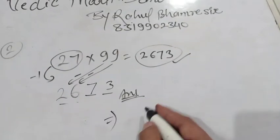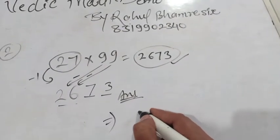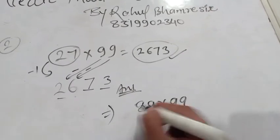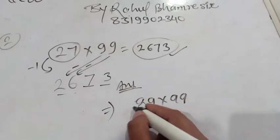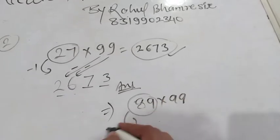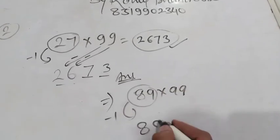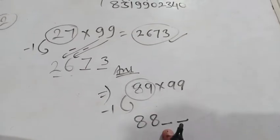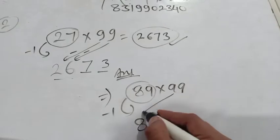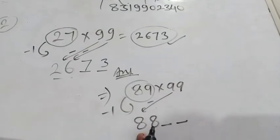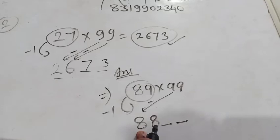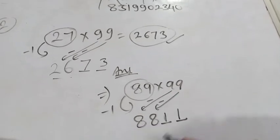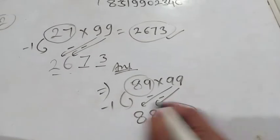The second term. If we take 89 multiply by 99. What will we do? We do less 1, 88. And also we have to space for 2 digit. 9 minus 8, the first digit. 9 minus 8, 1. Again 9 minus 8 become 1. So this is your answer.